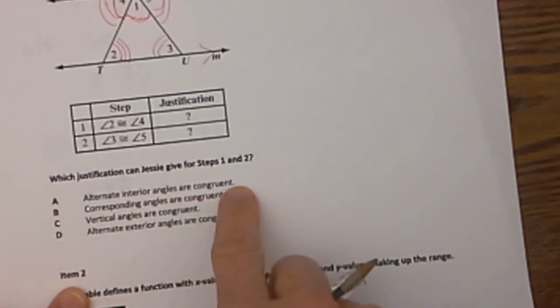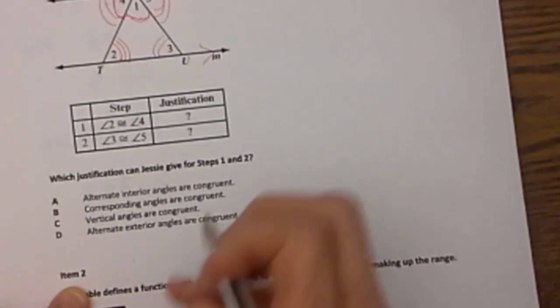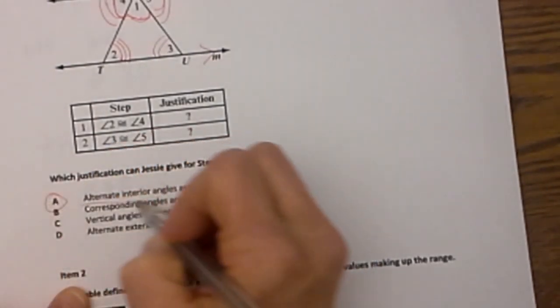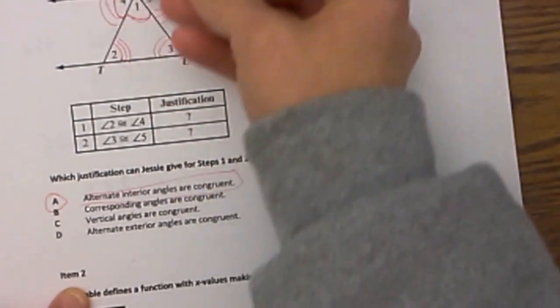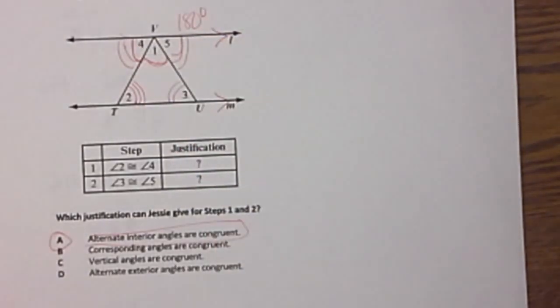Are they alternate interior angles, corresponding angles, vertical angles, or alternate exteriors? Well, those are alternate interiors because they fall between the two lines. Alternate interiors means they are on opposite sides of the transversal.